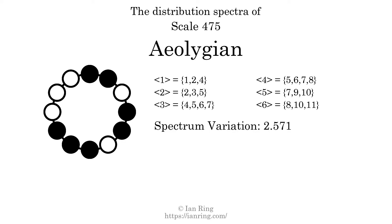The spectrum variation is the sum of all the widths divided by the number of tones. The spectrum variation of this scale is 2.571. Since the variation is greater than 0, this indicates that the scale is not perfectly even. The highest spectrum width is three. Since this is greater than one, we know that this scale is not maximally even.